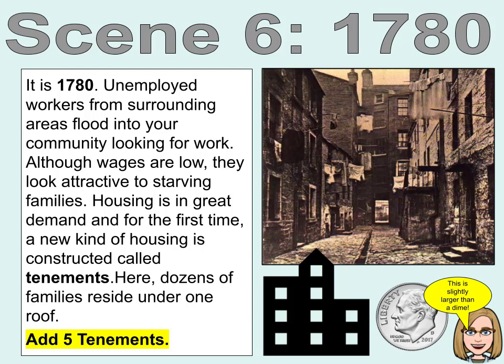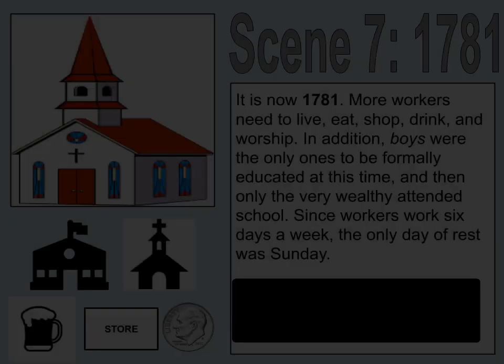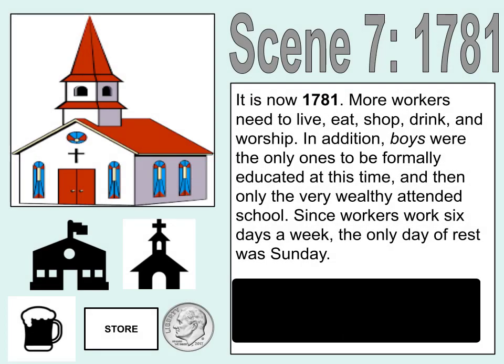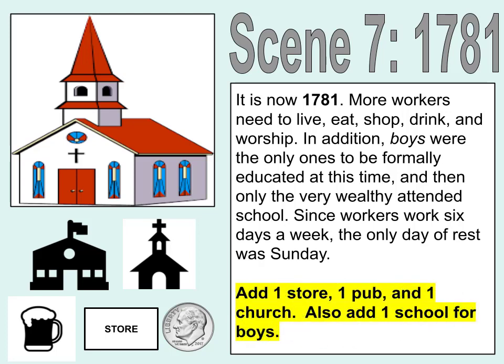Scene 7. It is now 1781. More workers need to live, eat, shop, drink, and worship. In addition, boys were the only ones to be formally educated at this time, and only the very wealthy attended school. Since workers work six days a week, the only day of rest was Sunday. Add one store, one pub, and one church. Also, add one school for boys.